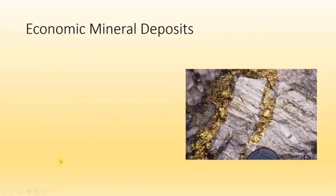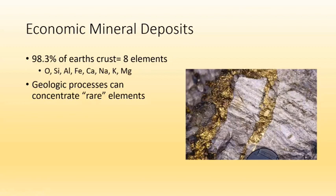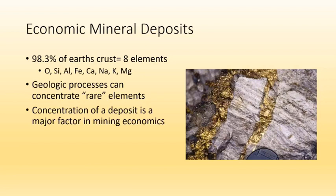Just to remind you, here are our eight most common elements in Earth's crust: oxygen, silicon, aluminum, iron, calcium, sodium, potassium, and magnesium. Most of our minerals on the planet are made of these. The rest of the elements on Earth are essentially rare, but certain geological processes can help to concentrate them. There's gold, silver, and others everywhere, but it's not economical to just mine your backyard.